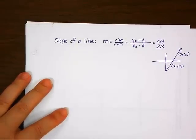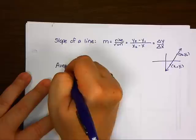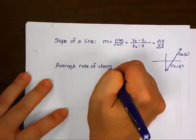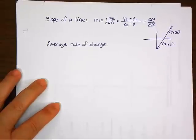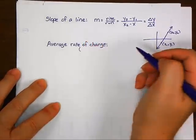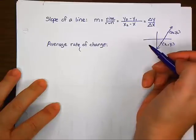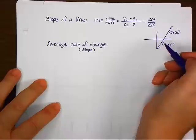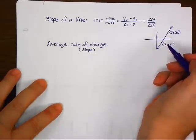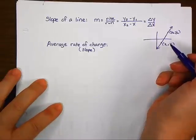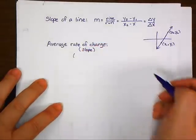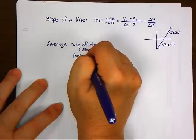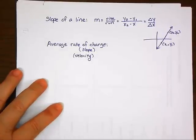We're going to take this a step further today and talk about something called average rate of change — a very important formula in calculus. What have you heard in math that is synonymous with rate of change? Slope. Slope and rate of change are the same thing. Average rate of change equals average slope. And in science, another word for rate of change is velocity, so this formula is for average velocity as well.